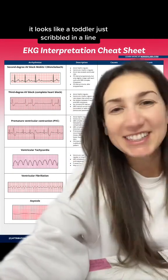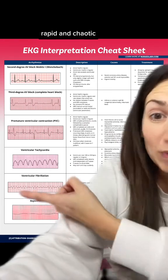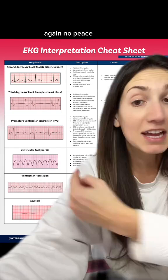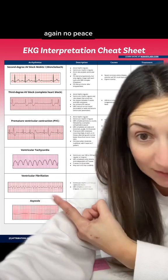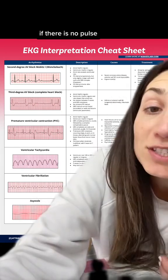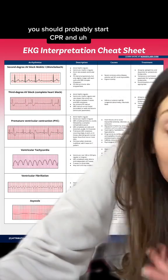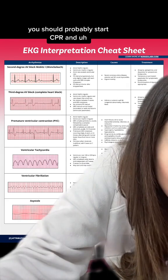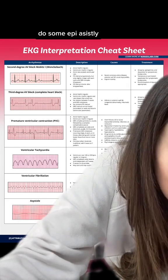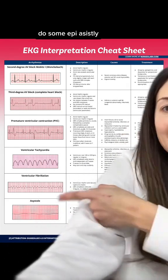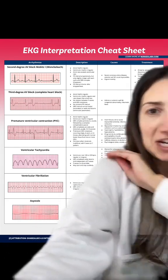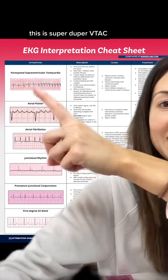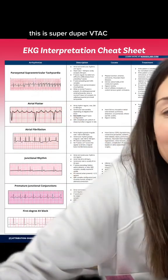If there is a pulse, give amiodarone. This is V-fib — it looks like a toddler just scribbled a line, rapid and chaotic. No P waves. If there is no pulse, start CPR and give epi.